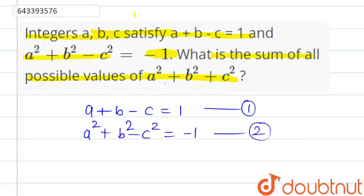What is the sum of all possible values of a squared plus b squared plus c squared? Whatever possible values of a, b, c can be — you need to find the sum of all possible values of a squared plus b squared plus c squared.